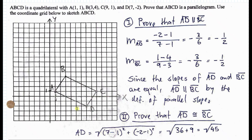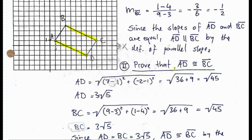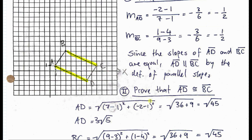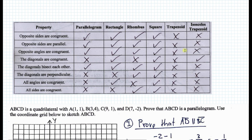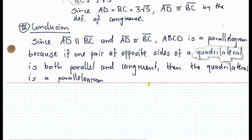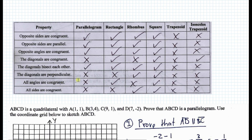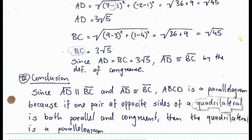First, sketch it out. Then you can prove that segment AB is parallel to segment DC, highlighting those two segments. You can also prove the other pair parallel. It's sufficient to prove one pair of opposite sides both parallel and congruent — if a quadrilateral has one pair of opposite sides that is both parallel and congruent, then it must be a parallelogram. Refer to the properties table as needed. Then write a conclusion. Keep this in mind when doing coordinate geometry proofs involving quadrilaterals.